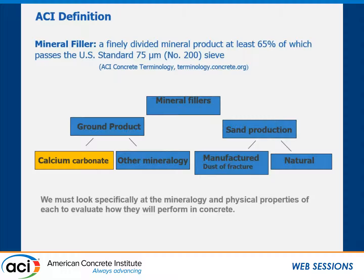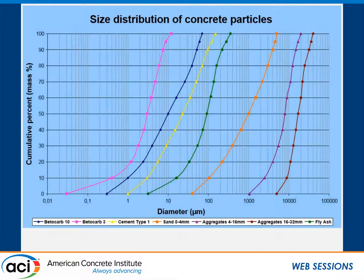The mineral filler definition we have at ACI is a finely divided material product where at least 60% passes the US standard 75-micron Number 200 sieve. There are different types: we've heard about a product from manufactured sand called dust of fracture, which is ACI's column C in the table Lane Shaw presented earlier, and the ground calcium carbonate product discussed in many presentations over the last couple of days.